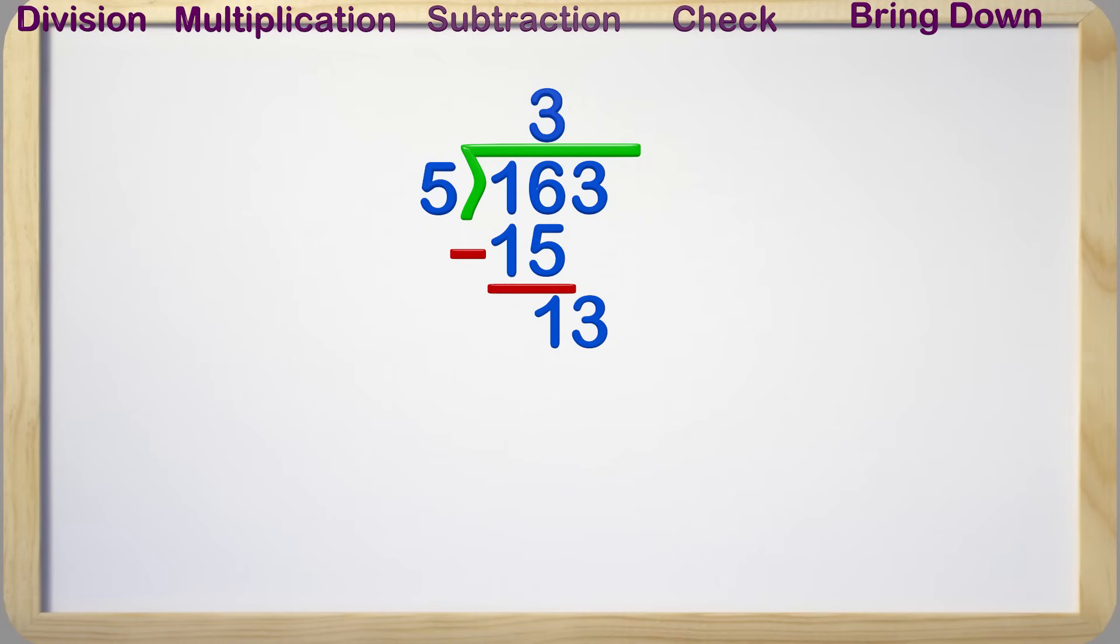We bring down the 3, and it makes 13. We start the steps all over again with division. How many times does 5 go into 13 without going over? 2 times, so we write the 2 above. Now we multiply 5 times 2, which gives us 10.